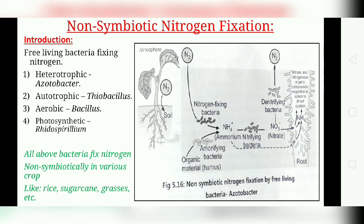Some anaerobic bacteria are non-photosynthetic, for example Bacillus, whereas Chromatium and Rhodospirillum rubrum are free-living photosynthetic bacteria capable of nitrogen fixation. Apart from bacteria, several cyanobacteria or BGA like Anabaena and Nostoc can also fix atmospheric nitrogen. Most of these free-living nitrogen fixers are slow-growing organisms.